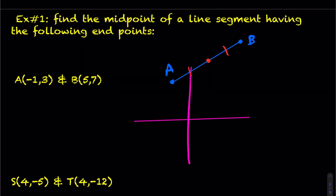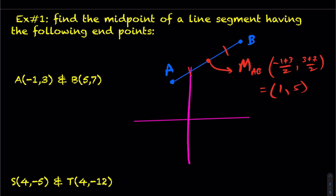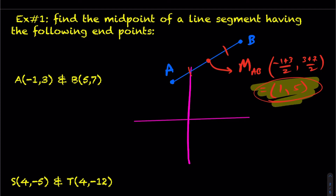How do you find the midpoint? First, how do you label it? This would be labeled M subscript AB. To calculate it, we add up our x's and divide by 2, and we add up our y's — in this case 3 and 7 — and divide by 2. We end up getting (1, 5). You could even verify this using the distance formula to confirm the distances are the same.